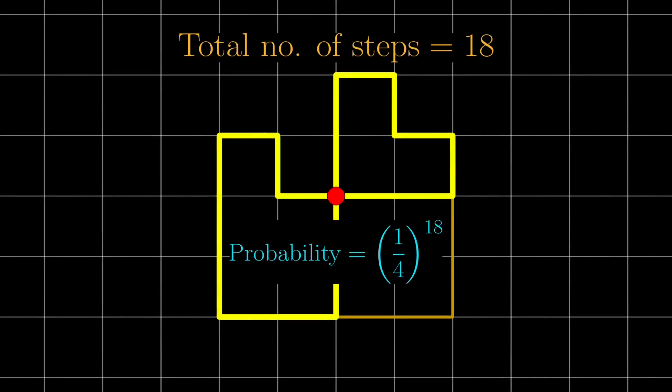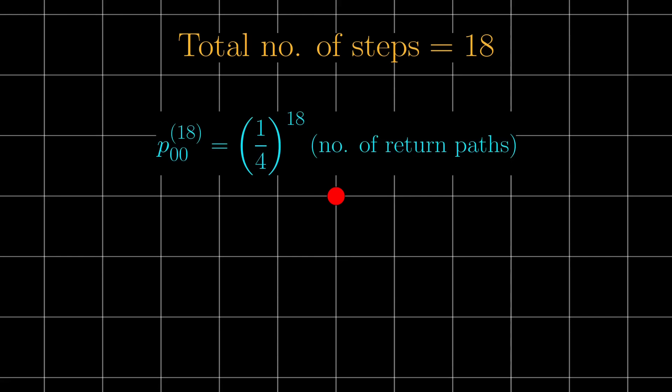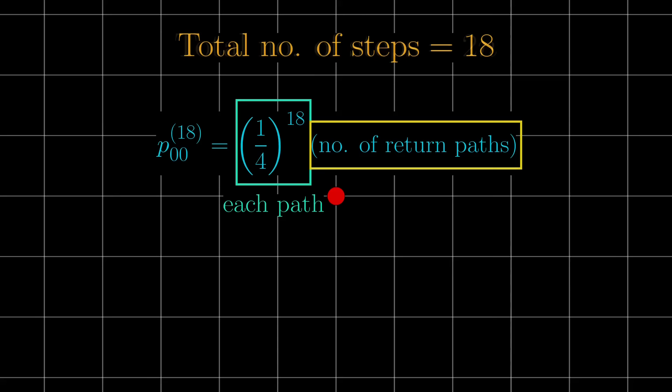Because you will still answer yes in the previous argument. Anyway, the new path also has probability 1 quarter to the 18. More explicitly, when calculating the 18th step return probability, we just add up these probabilities. This part is the probability of getting a specific return path, and we then multiply by the number of return paths to get the overall probability. So it all boils down to counting the number of return paths.